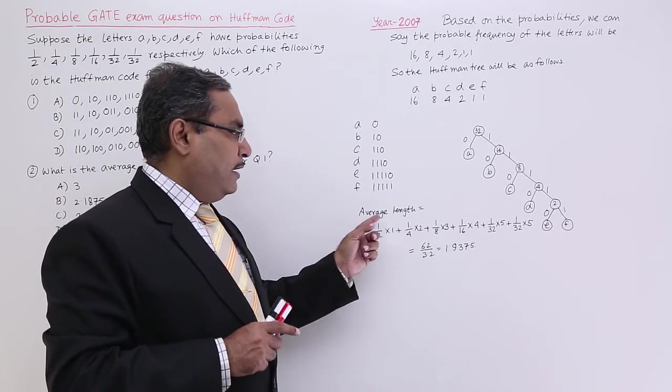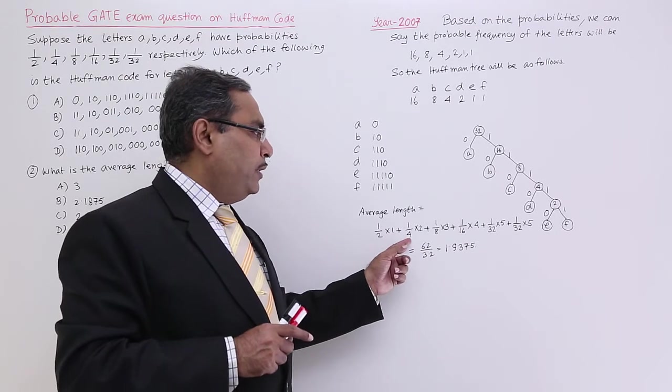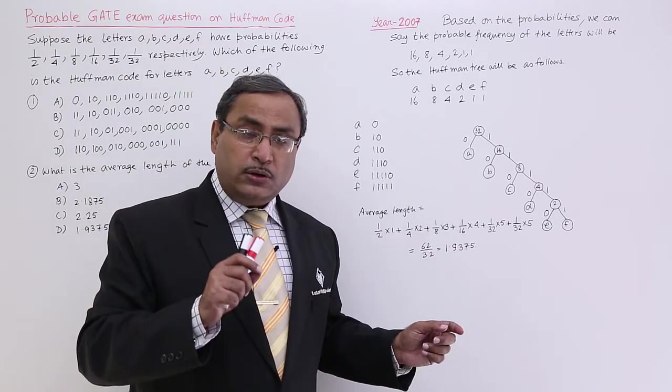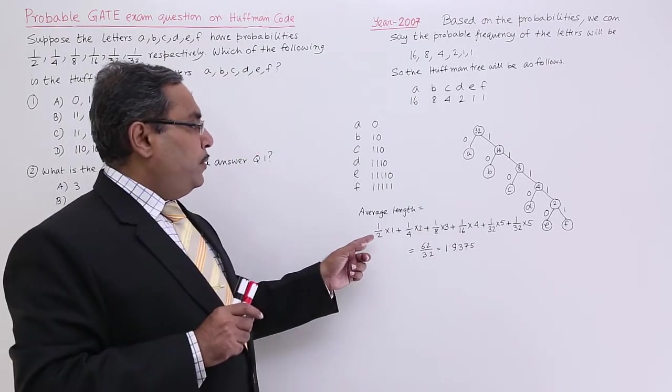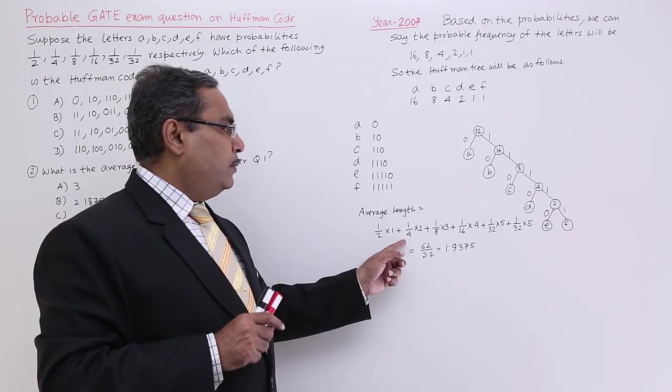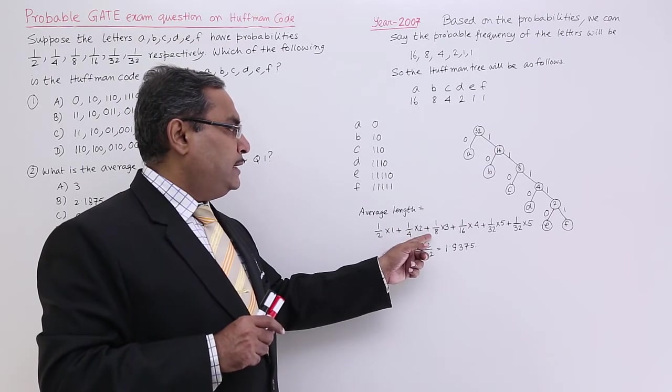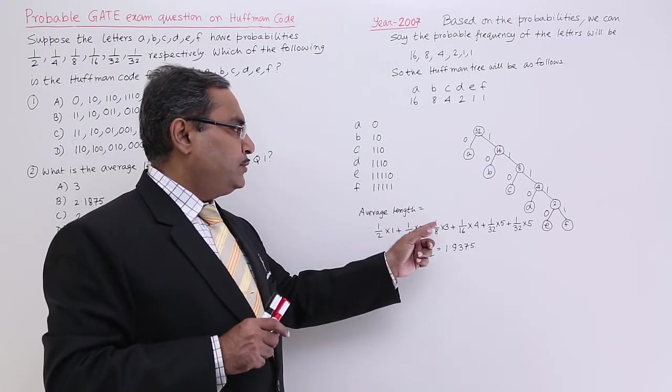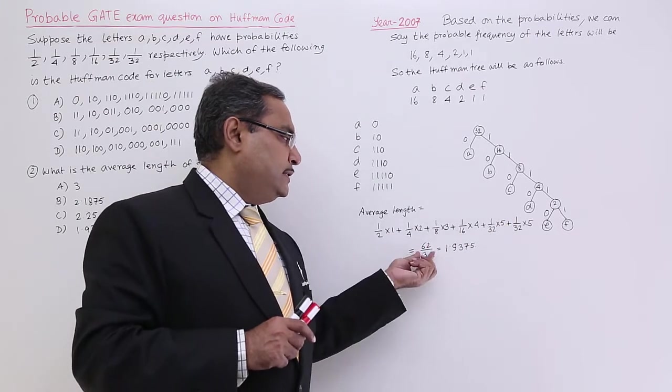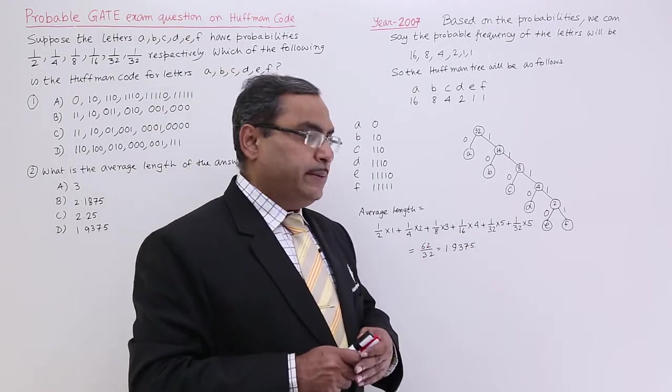Now, average length I want to calculate. Here I am taking the probability values which were given in the question paper. Probability 1 by 2 into length 1 plus probability 1 by 4 into length 2 plus probability 1 by 8 into length 3. In this way I did the rest, so that is 62 by 32, which is 1.9375.